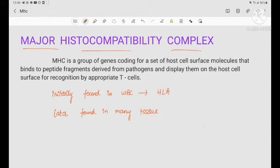MHC was initially found in white blood cells, so that is why this is called human leukocyte antigen. Later it was found in many tissues. It also helps in transplantation of graft. It determines the compatibility of the tissue between the host and the graft, and hence it is called histocompatibility complex.